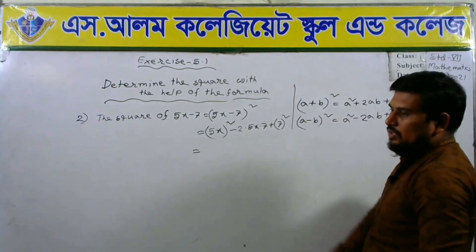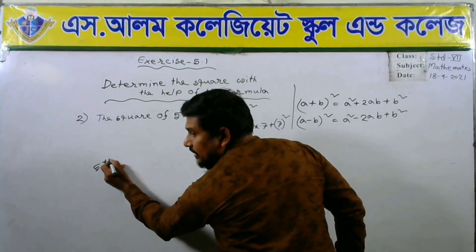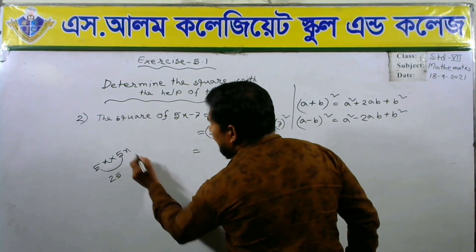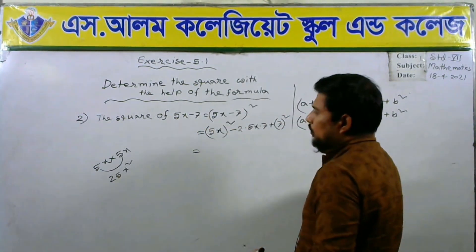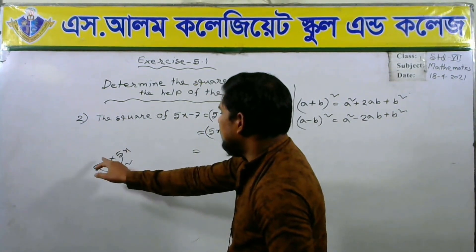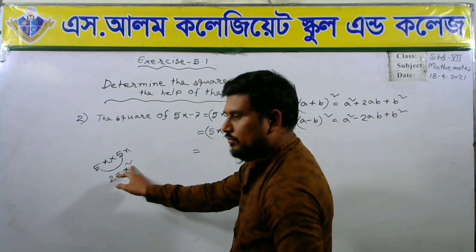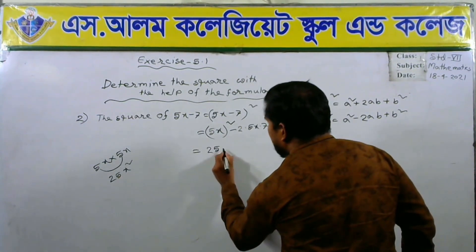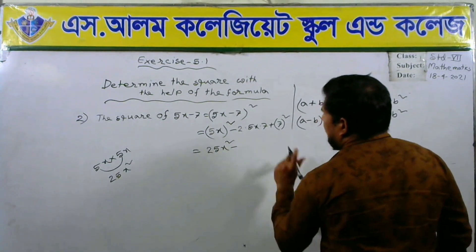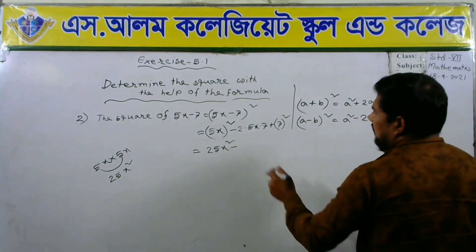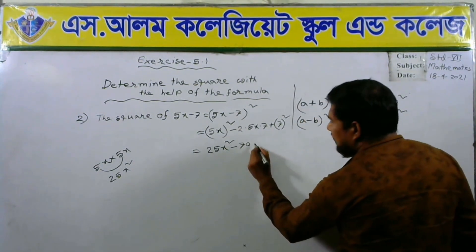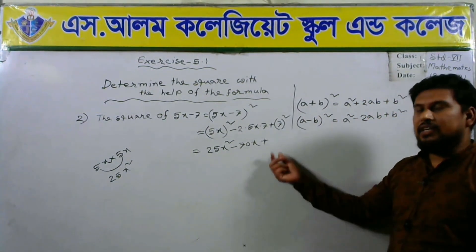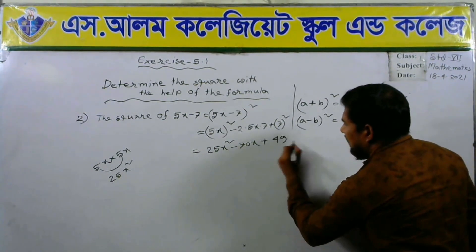5x whole square means 5x into 5x. So we can multiply 5 into 5 equals 25 and x into x equals x square. We can add the powers of x: 1 plus 1 equals 2. So we get 25x square minus 2 into 5 into 7 equals 70, then we write 70x, plus 7 square means 7 into 7 equals 49. So this is the answer: 25x square minus 70x plus 49.